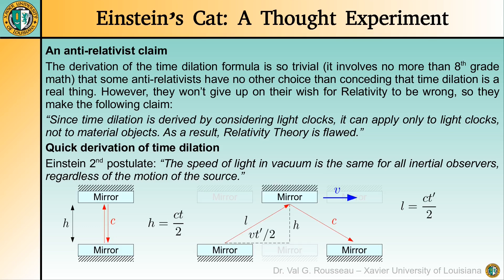But we can do better and determine exactly by how much the time t' is longer than the time t. For this, we apply again the definition of speed to find that l is equal to ct' over 2. But we can also make use of the Pythagorean theorem and say that l squared must be equal to the square of the base of the right triangle, vt' over 2, plus the square of its height, h. Next, we substitute ct over 2 for the value of h and ct' over 2 for the value of l. We obtain an equation that depends only on the times t and t' and the speed of light c. Finally, by solving for t', we obtain the famous time dilation formula. As you see, the derivation is ridiculously simple, so if you want to prove that the time dilation formula is wrong, you basically have to prove that the Pythagorean theorem is wrong. Good luck with that!